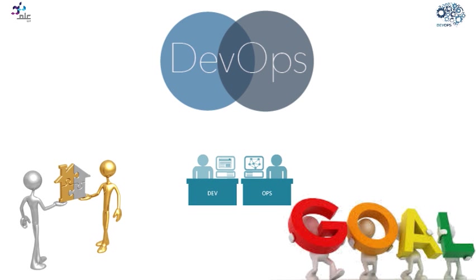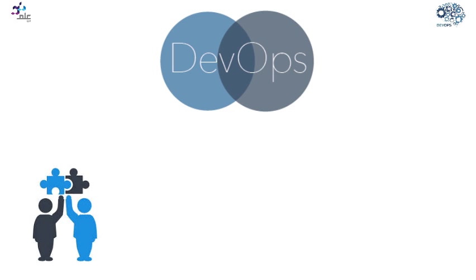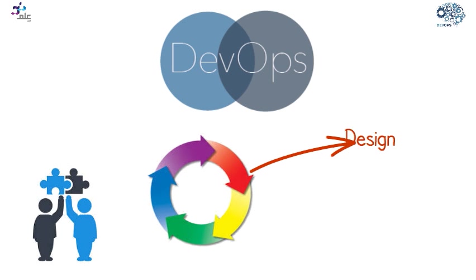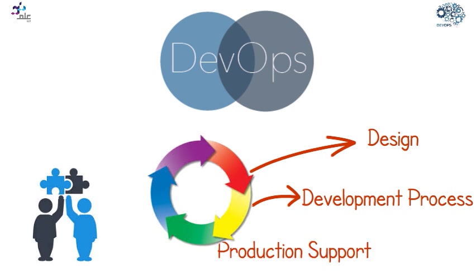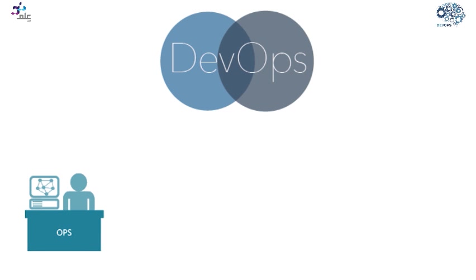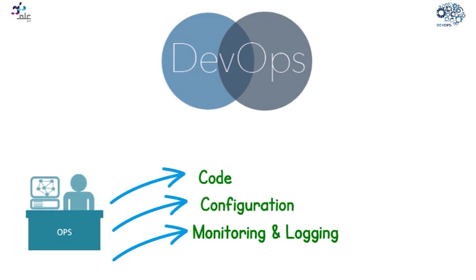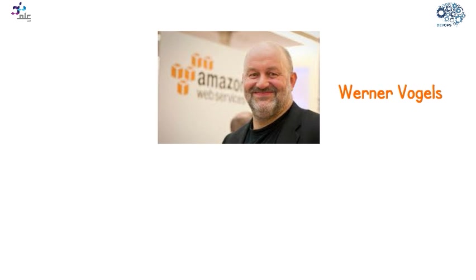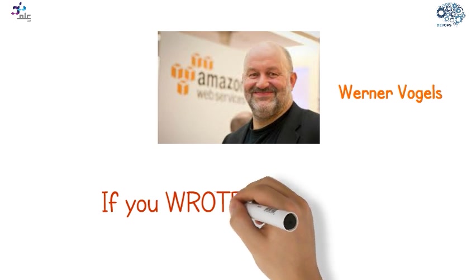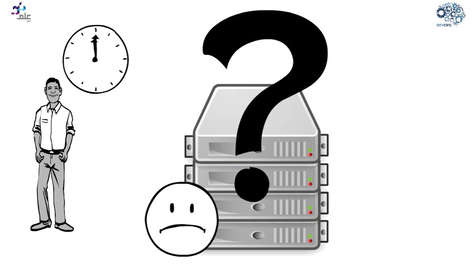That goal is to share ownership, responsibility, and commitment — where operations and development engineers participate together in the entire service lifecycle, from design through the development process to production support. DevOps is also characterized by operations staff making use of many of the same techniques as developers for their systems work. As Amazon CTO Werner Vogels put it, one of the important principles in DevOps is: 'If you wrote it, you run it.'